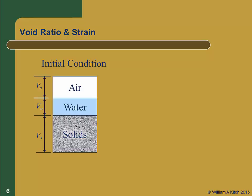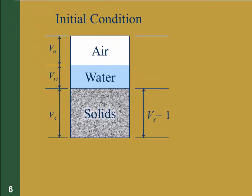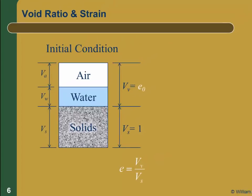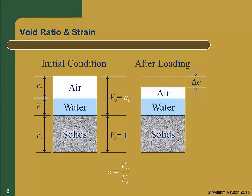On the left, we have our initial conditions. For convenience, we'll assume the volume of voids is equal to one unit. Recalling that the void ratio is equal to the volume of voids divided by the volume of solids, when the volume of solids is equal to one, the volume of the voids will simply be equal to the void ratio E. In this case, it will be E0, the initial void ratio. Now after loading and consolidation, there will be a change in the volume of the soil. And all of that change will be in the void space. And therefore, the change in volume will be equal to delta E.